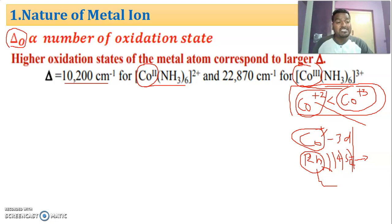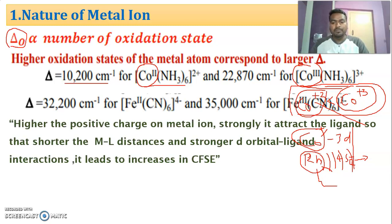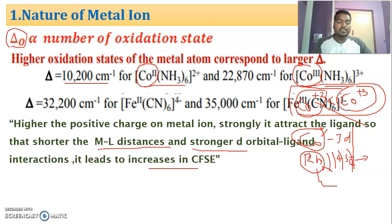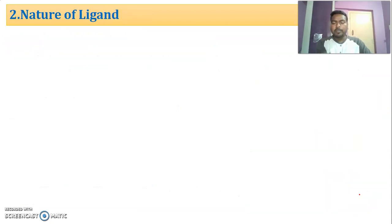In the principal quantum number case, more electrons are exposed outside, ligand repulsion is more, and CFSE will be more. In the case of cobalt +3 versus +2, attraction towards the electron itself increases due to decrease in size and increase in oxidation state. Don't confuse between both criteria. Higher the positive charge on the metal ion, the more strongly it attracts the ligand; shorter will be the metal–ligand distance, stronger will be the d orbital interaction, and it leads to increase in CFSE value.